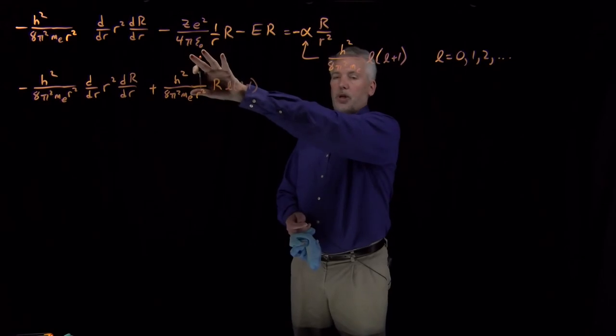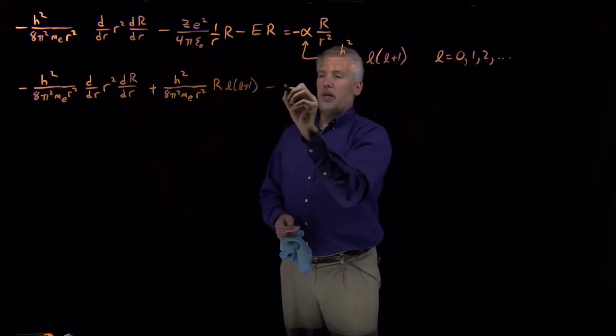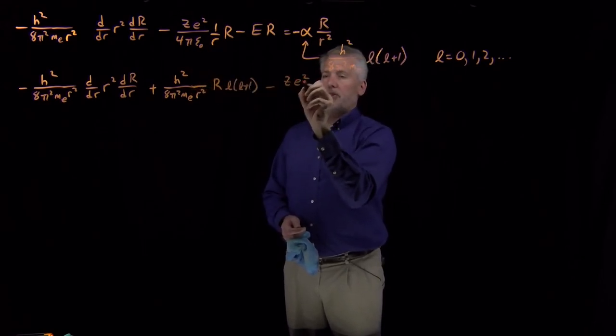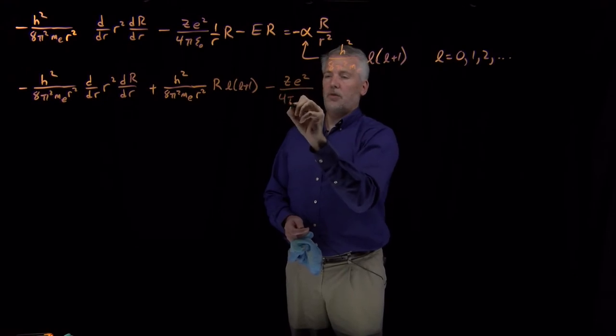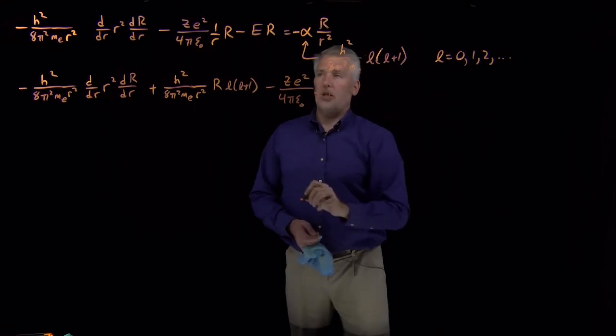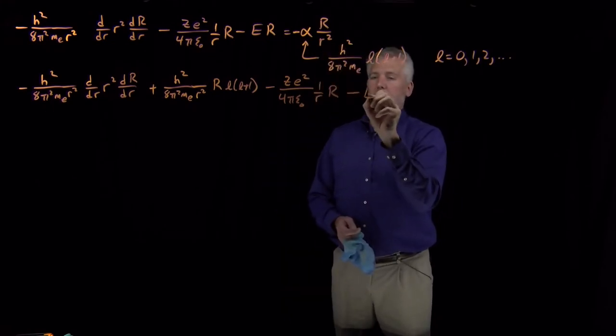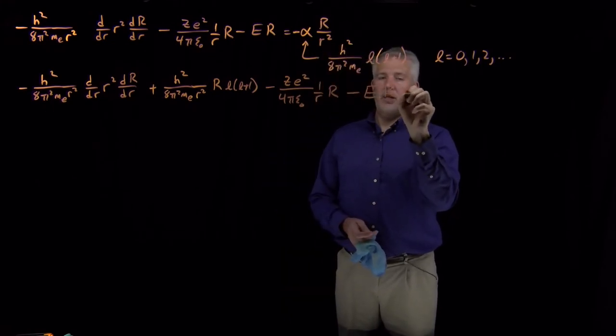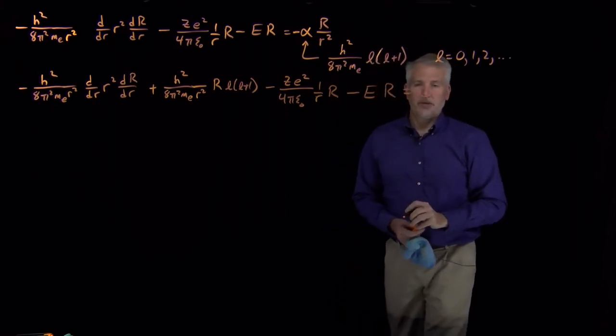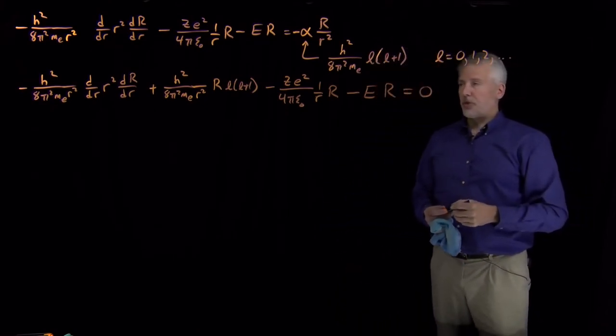Now all I have left is the Coulomb term, minus z e squared over 4 pi epsilon naught R times capital R, and then if I subtract energy times R, I must get 0. So there's the differential equation that we need to solve.